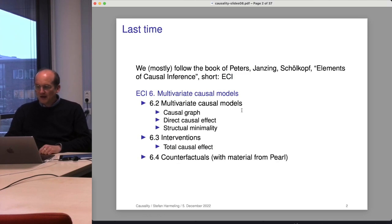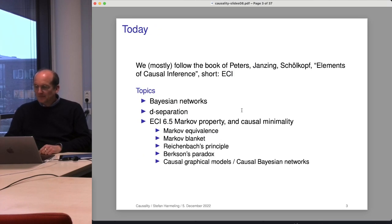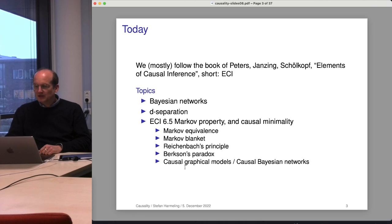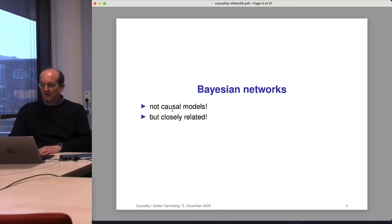I'm following the book from Peters and Schölkopf — the Markov property and causal minimality sections are basically from that book, and the other ones are from my machine learning lecture. So what are Bayesian networks? They are not a causal model but they are closely related. In a nutshell, a Bayesian network is also a graph that defines a probability distribution, but the graph is not necessarily telling us something about causal relationships.